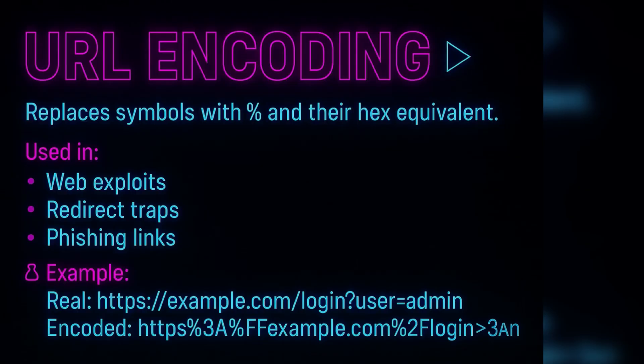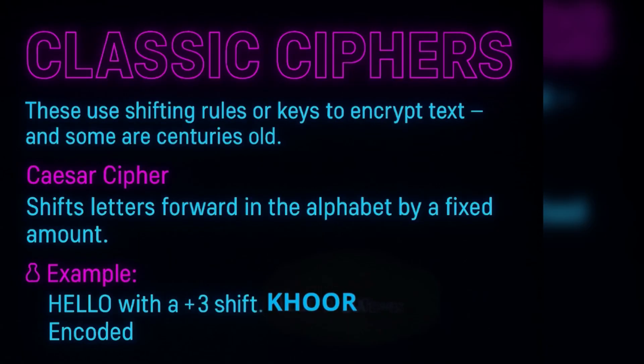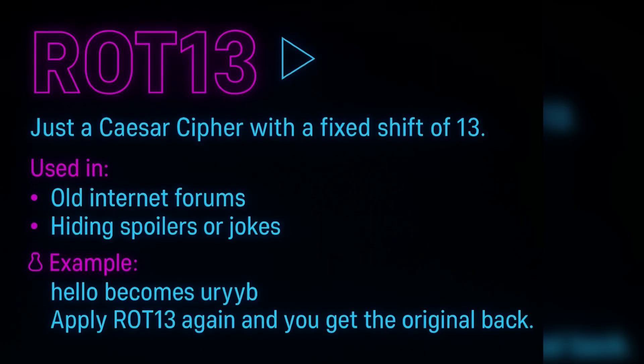Now let's talk about ciphers — these shift or scramble text. The Caesar cipher shifts letters forward by a fixed amount; for example, 'hello' with a plus-three shift becomes a new word on screen. ROT13 is a Caesar cipher with a fixed shift of 13, usually used in old internet forums. 'Hello' in ROT13 becomes the result shown.